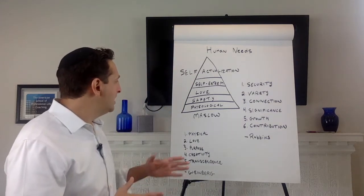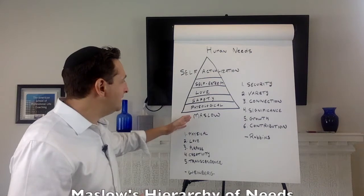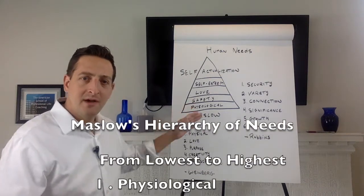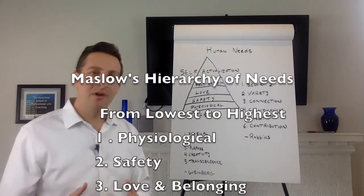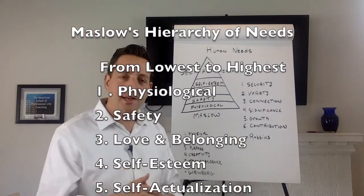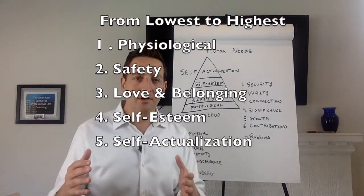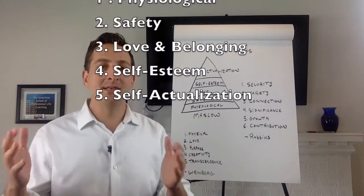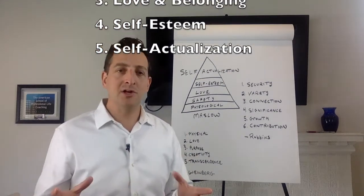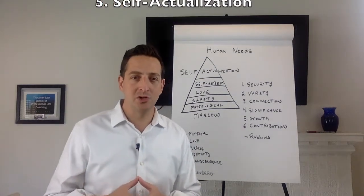The first one is Maslow and the five needs. Starting at the bottom are physiological needs, physical needs that people have. The next level are safety needs, then love, then self-esteem, and then self-actualization.